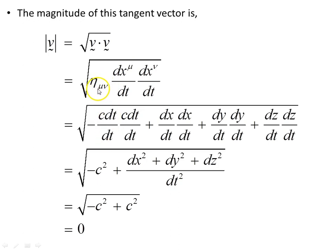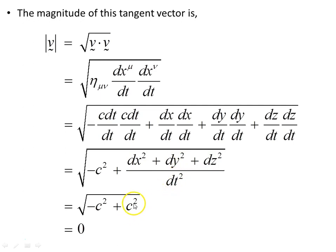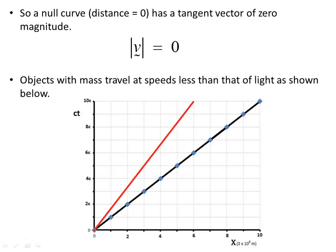Expanding out with μ = 0, 1, 2, 3 and taking the square root: the dt·dt cancels out leaving −c². Collecting a common denominator of dt², the term (dx/dt)² is the speed of light squared, giving +c². The −c² and +c² cancel, giving zero. So the magnitude of the tangent vector is zero for light — a null curve has distance equals zero and a tangent vector of zero magnitude.